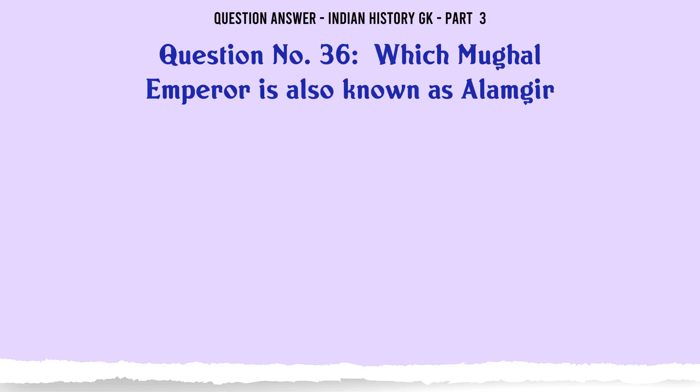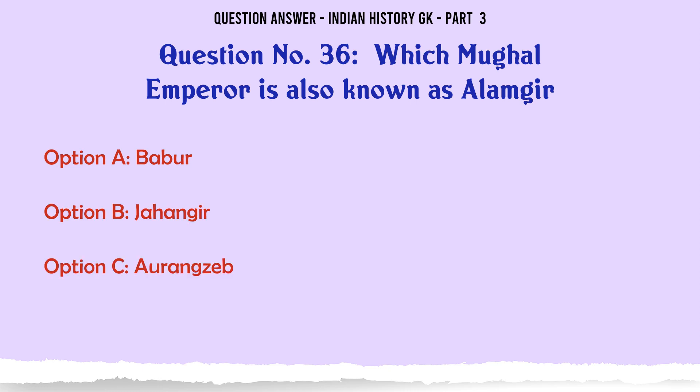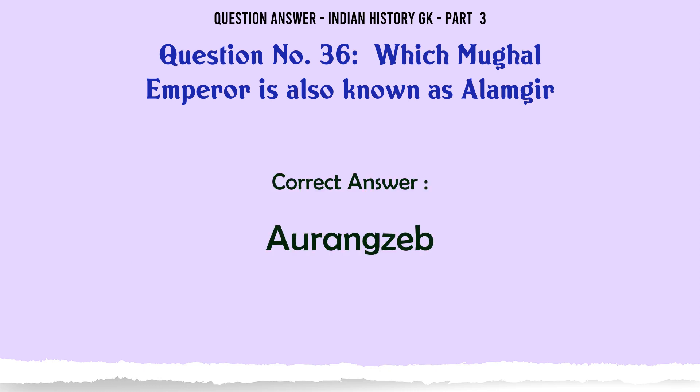Which Mughal emperor is also known as Alamgir? A. Babur, B. Jahangir, C. Aurangzeb, D. Humayun. The correct answer is Aurangzeb.